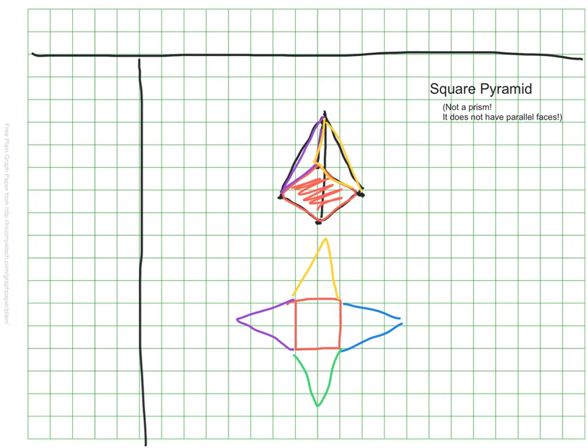So remember that the essential question of this video was, what is a net? So we've seen a couple examples of nets. Nets are quite simply the two-dimensional representation of a 3D shape. We will be working with a lot of prisms, but as we can see with our final example, sometimes we'll have other 3D shapes as well.